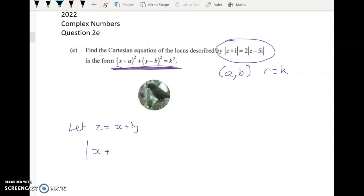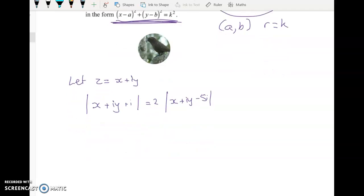So let's substitute in. We get x plus iy plus i is equal to 2 times the modulus of x plus iy minus 5i. So now we're going to carefully group up the real and the imaginary part. So we've got x plus i times (y plus 1). I don't know what's gone wrong with the thing there.